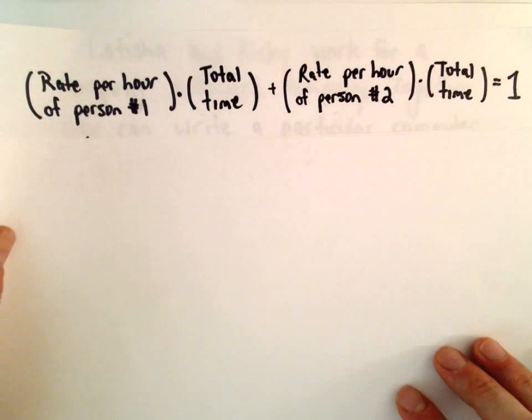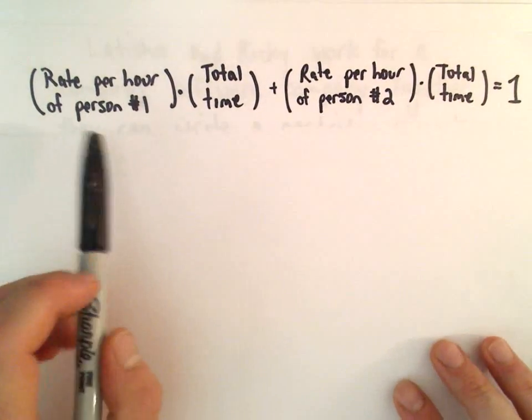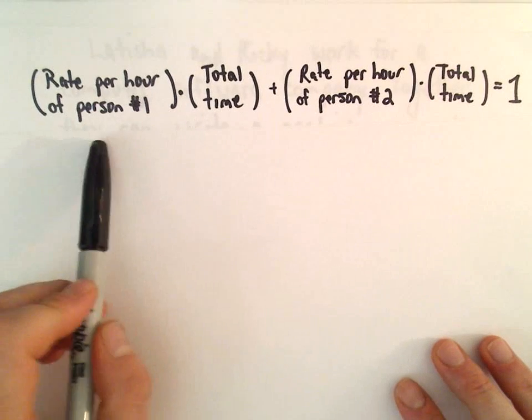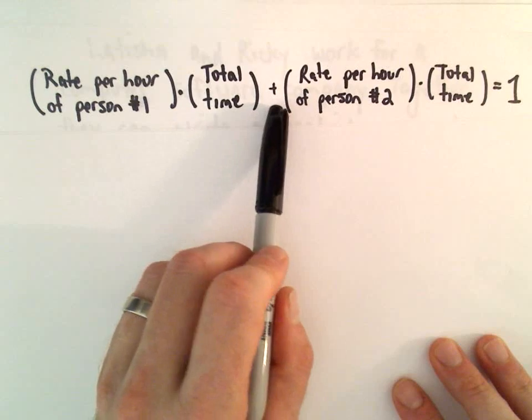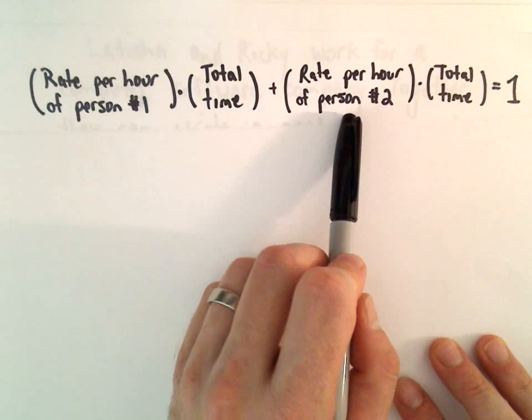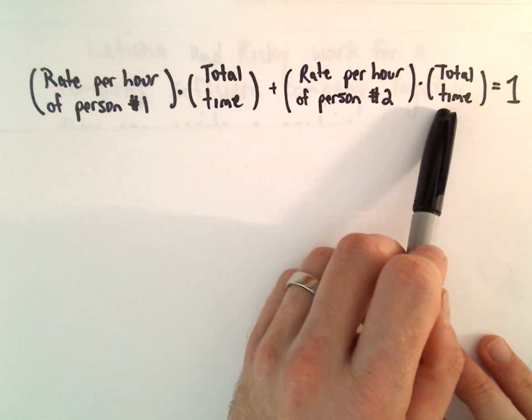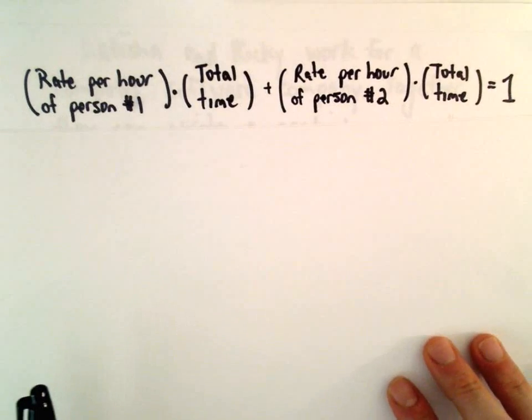The equation that we can use here, if we look at the rate per hour of one of the people, if we multiply that by the total time to get the job done, plus we look at the rate per hour of the other person multiplied by the total time, that equals 1.